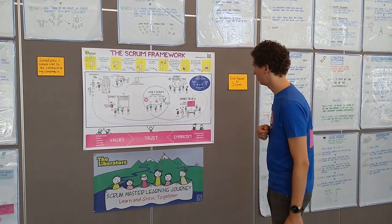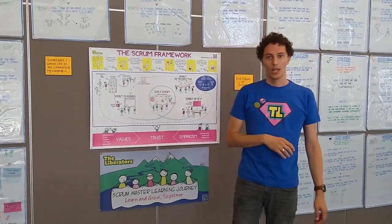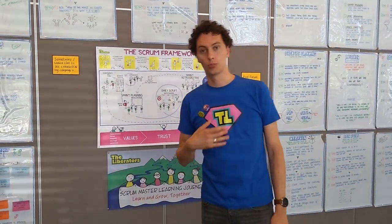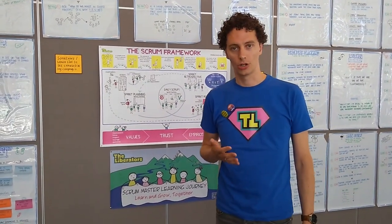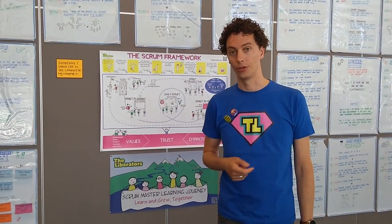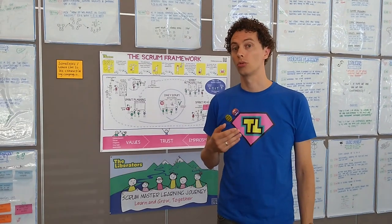Another example is the sprint retrospective. For the sprint retrospective, you could pretty much use every liberating structure there is. There are over 33 of them, and many of them work really well.